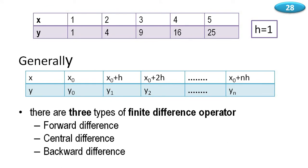There are three types of finite difference operators: the first is forward difference, the second is central difference, and the third is backward difference.